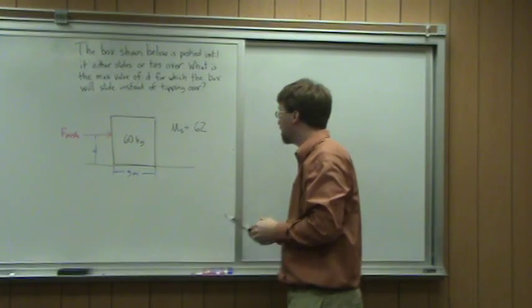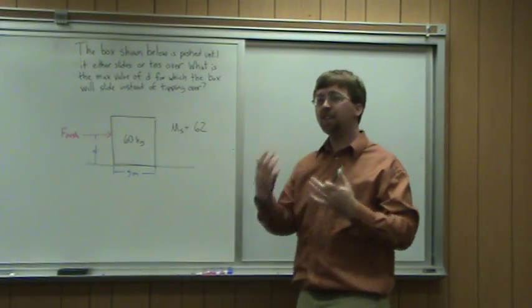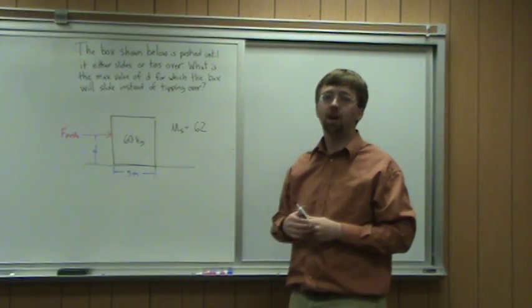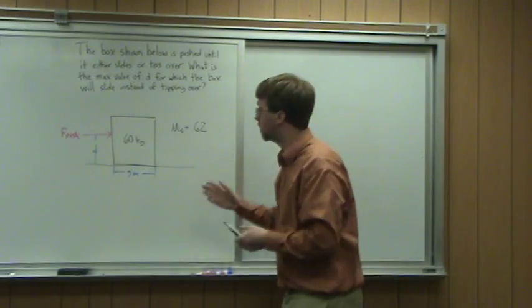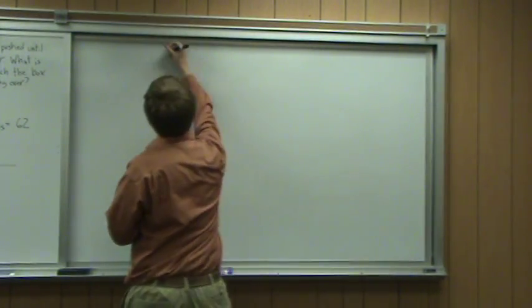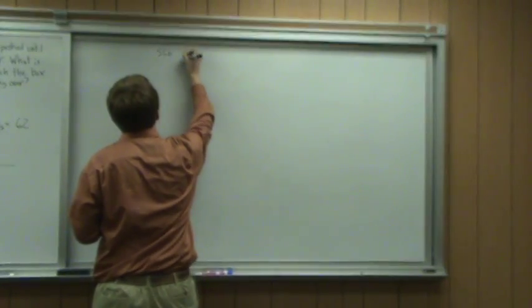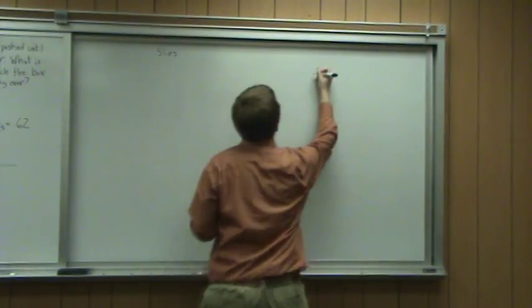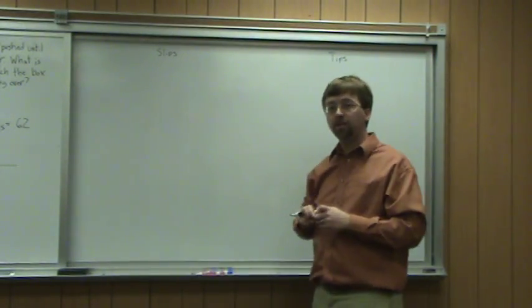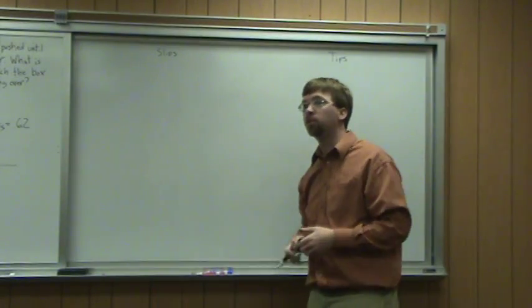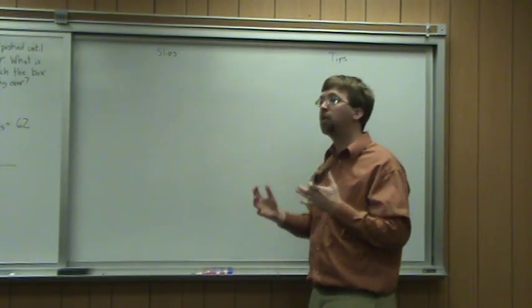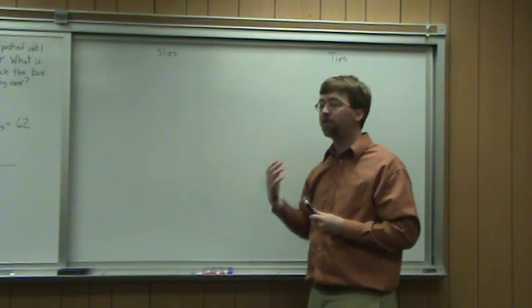So for this, I'm going to need to compare the two scenarios and find the point where it's equally likely to tip over as it is to start sliding. I've got two conditions: condition one where it slips and condition two where it tips. I'm going to find the value D for which the pushing value for both of these is the same. If the pushing value is the same, then both of them are equally likely to happen at that value of D.